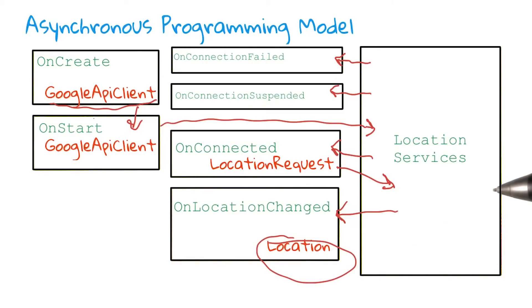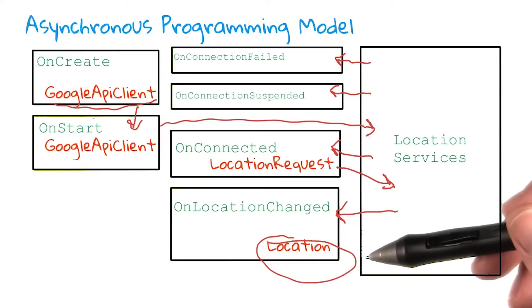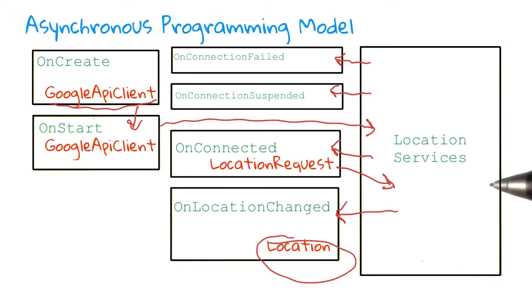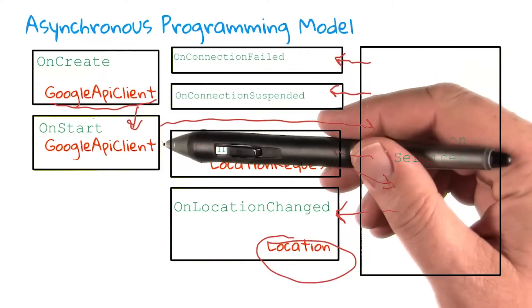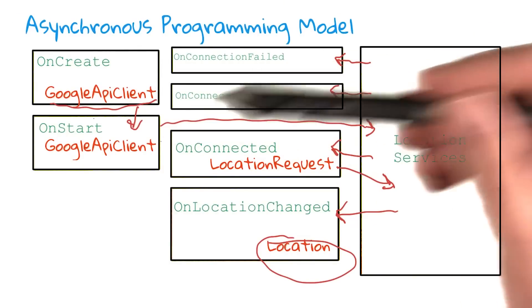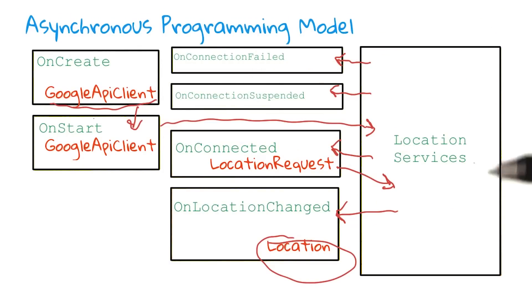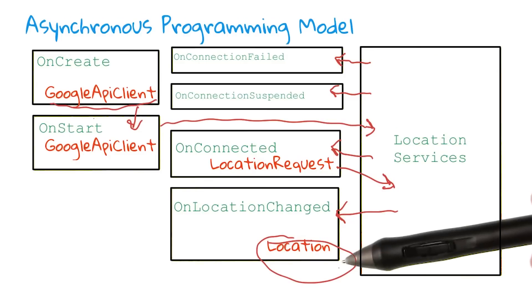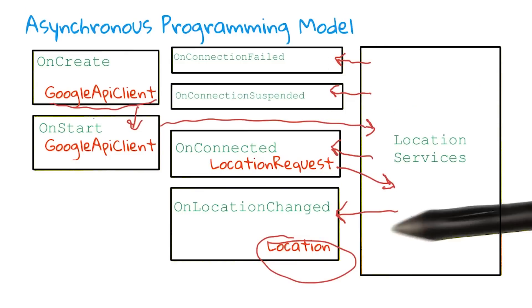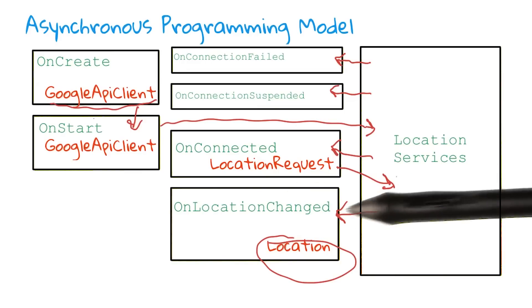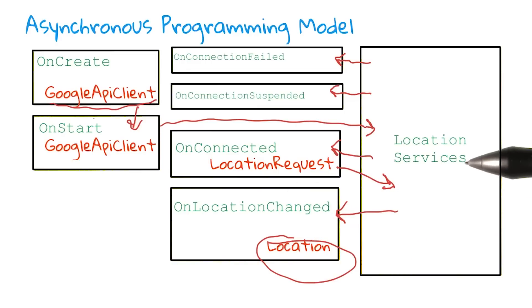So in the application that we just saw, that location object included a latitude, and I was able to update my screen and write the latitude to it. Now this programming model isn't just limited to location services. Many of the services that you'll be using during this course follow a very similar programming model. You're going to have an onCreate and an onStart, a Google API client that you connect to the services you want to use, and then you have to handle certain overrides — usually onConnectionFailed, onConnectionSuspended, onConnected, and then an override specific to the services you're using. In this case, it's onLocationChanged for location services.